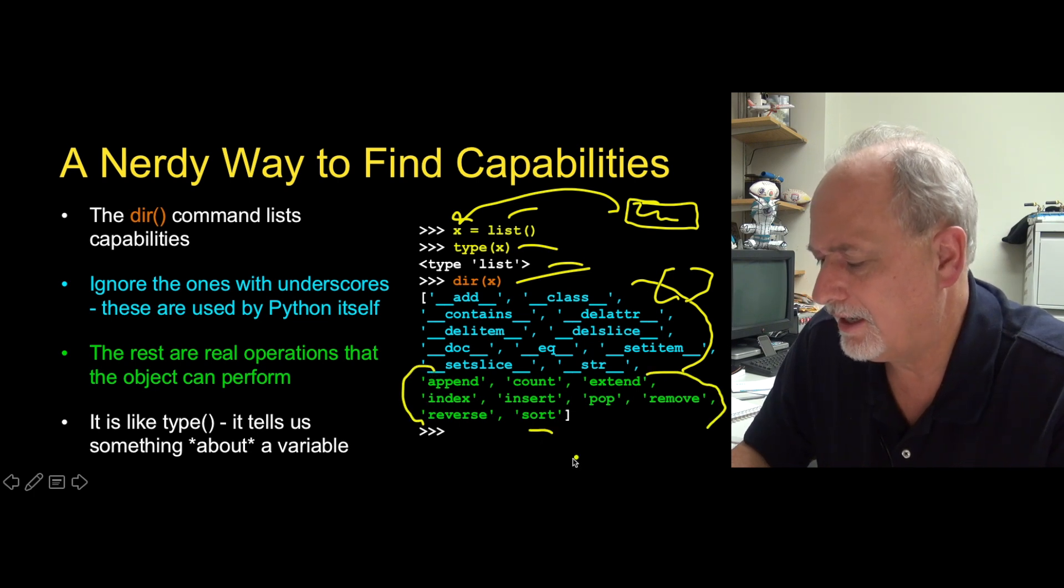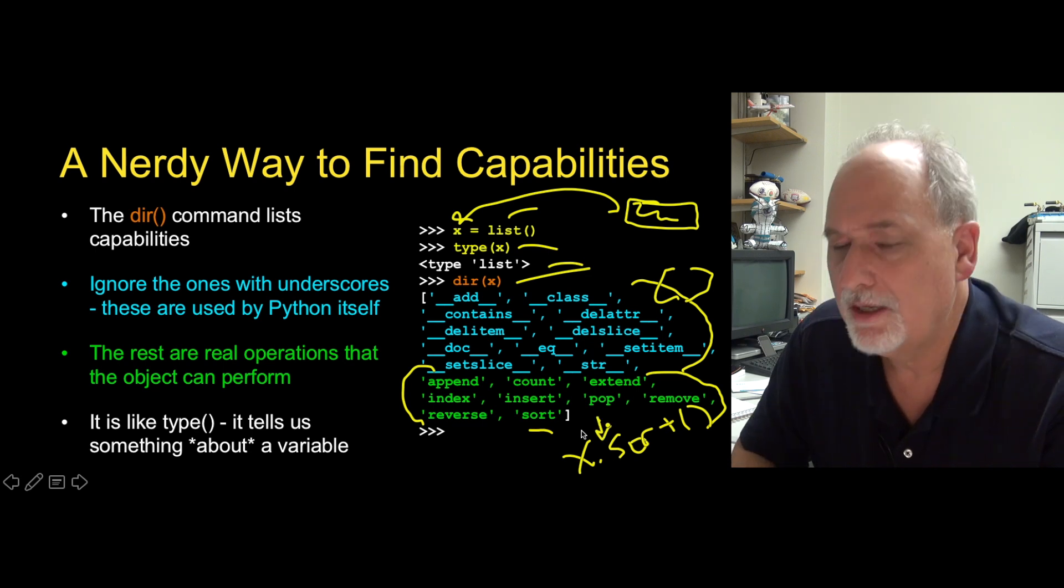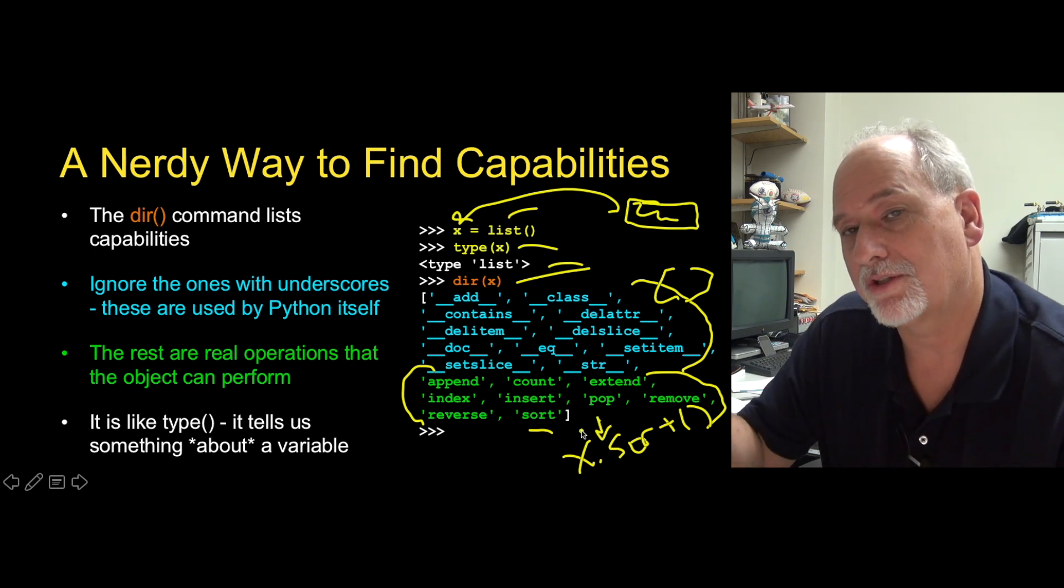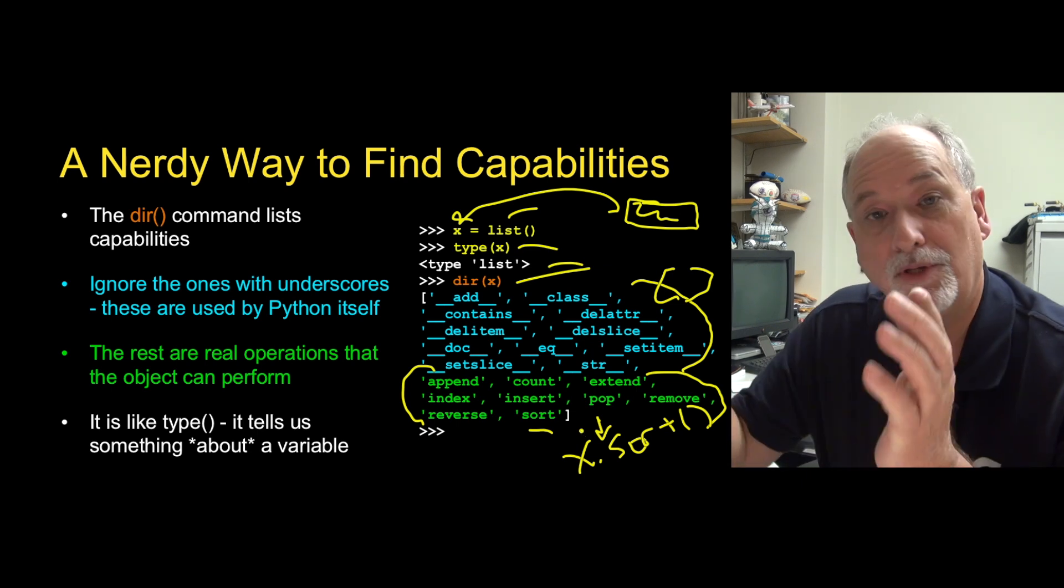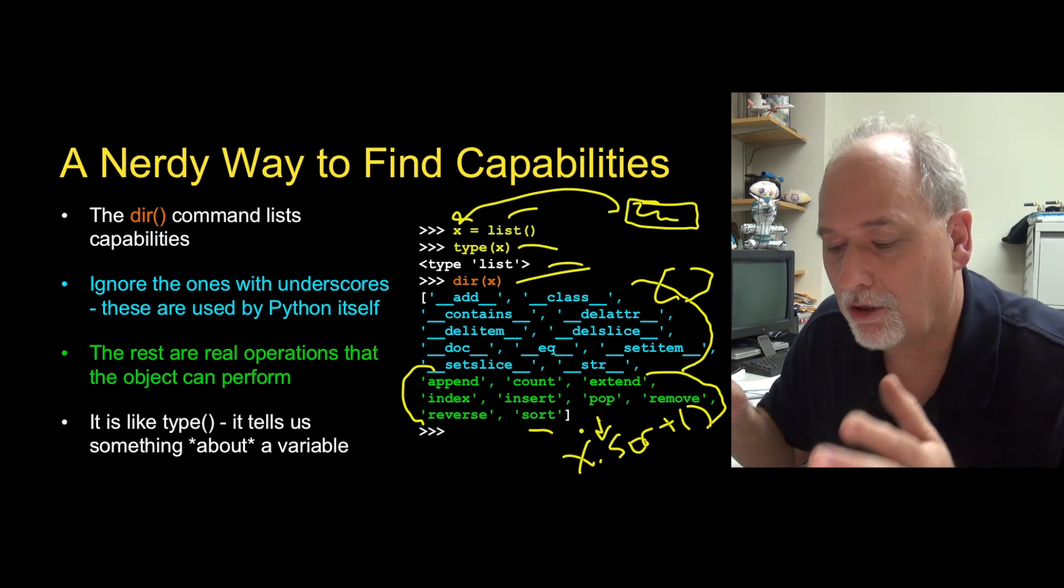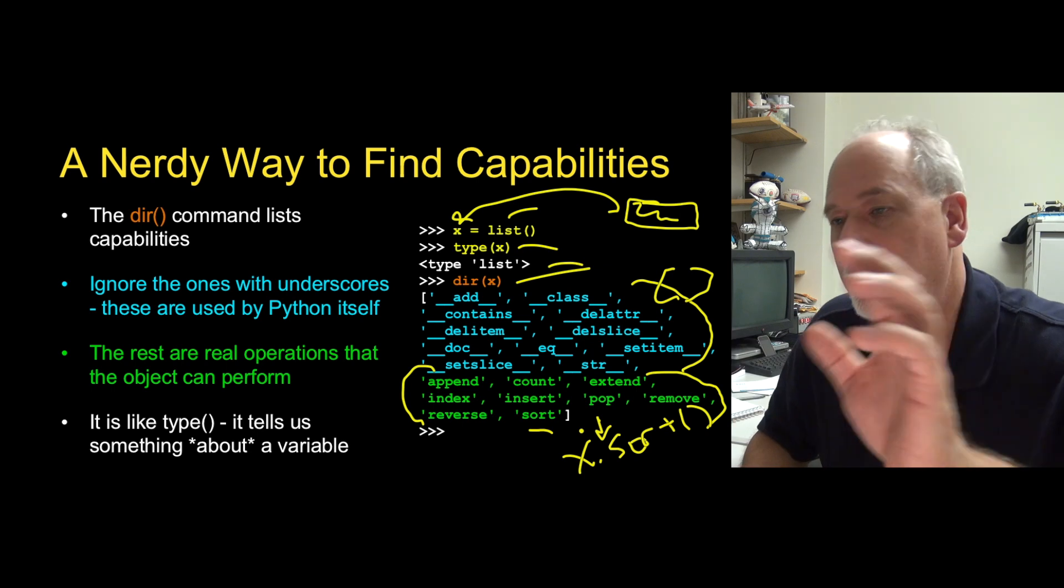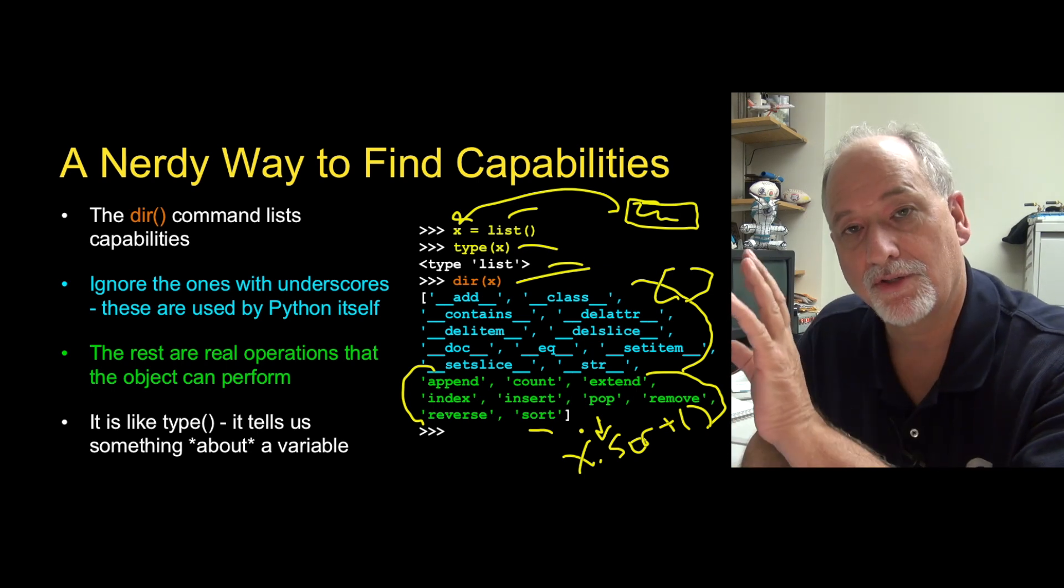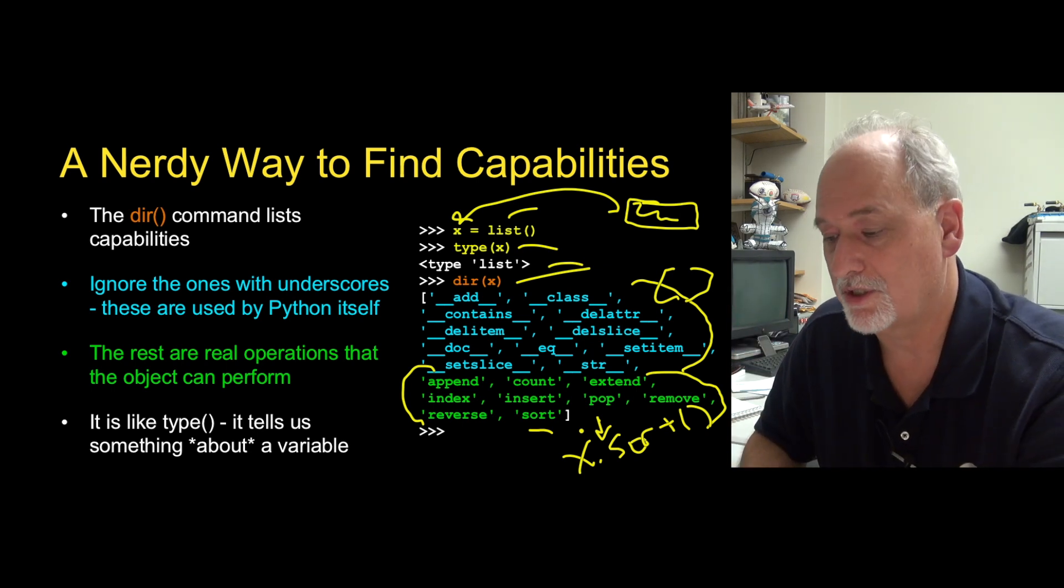But the methods that we tend to call are in this class. And so things like x.sort, I've always told you that is the sort method within the x thing. And the dot operator is the operator that we use to look something up within an object. And so you've been using the syntax all along. X.sort, dictionary.items, all of those are methods within the corresponding class.